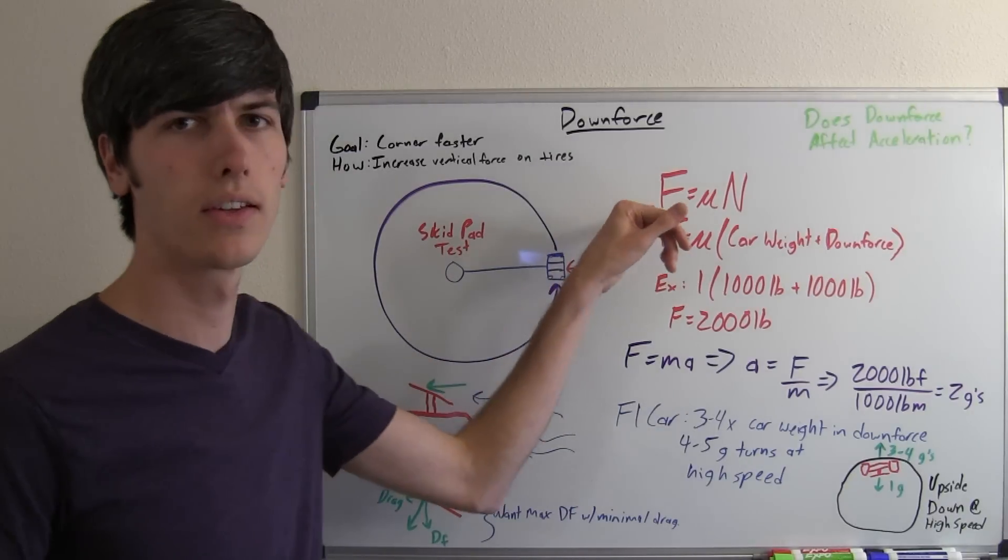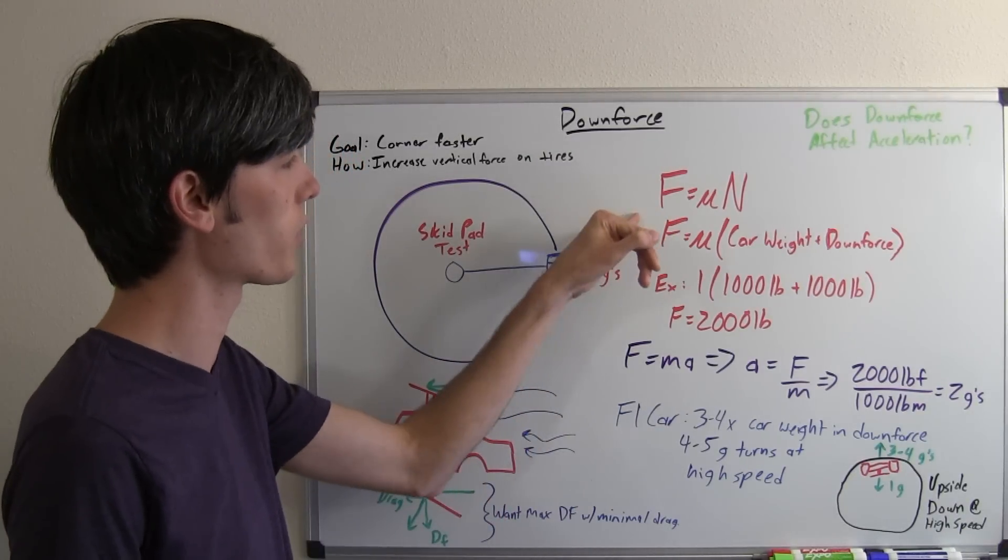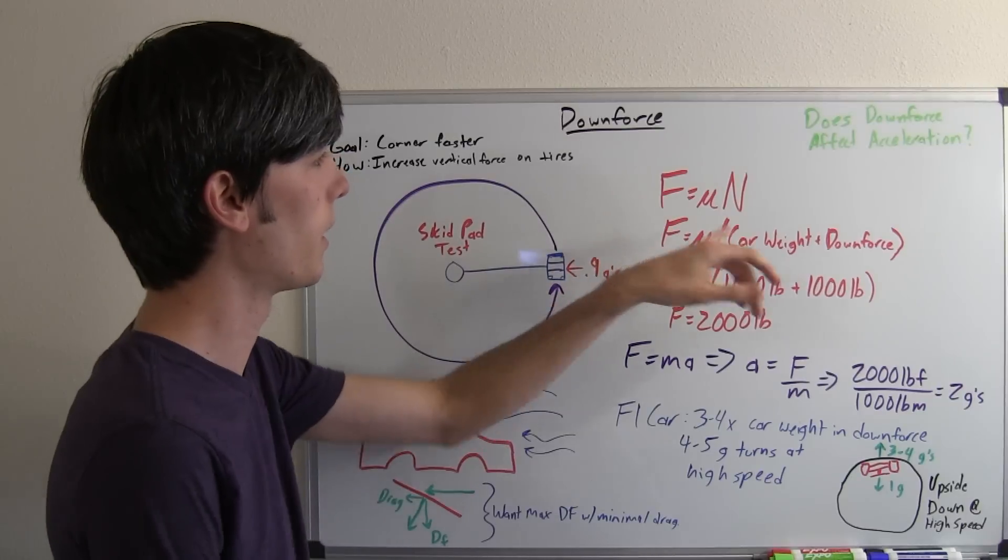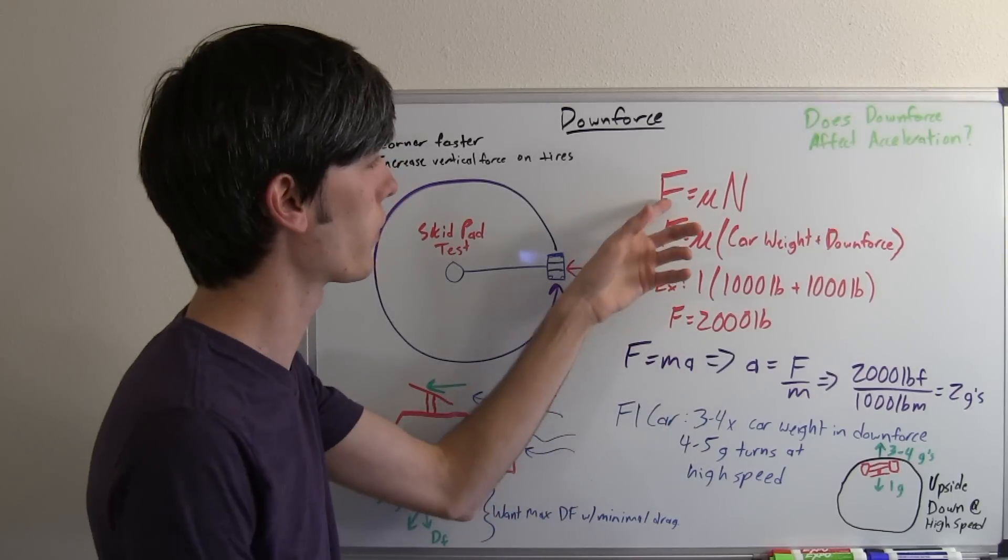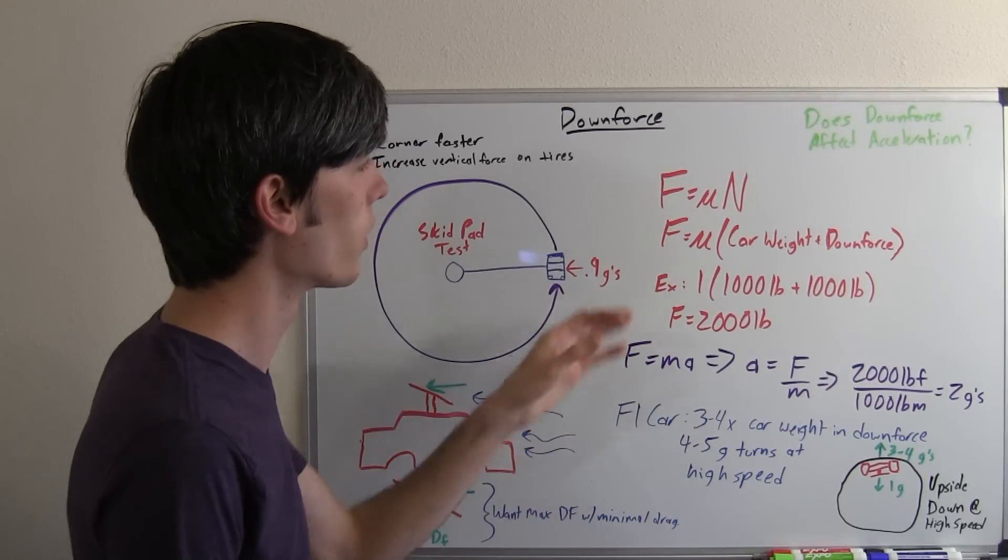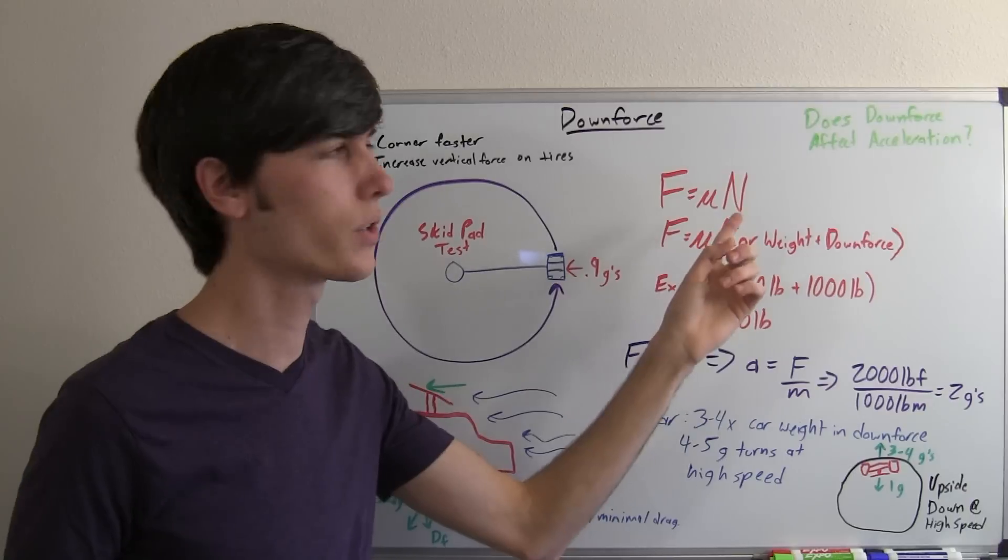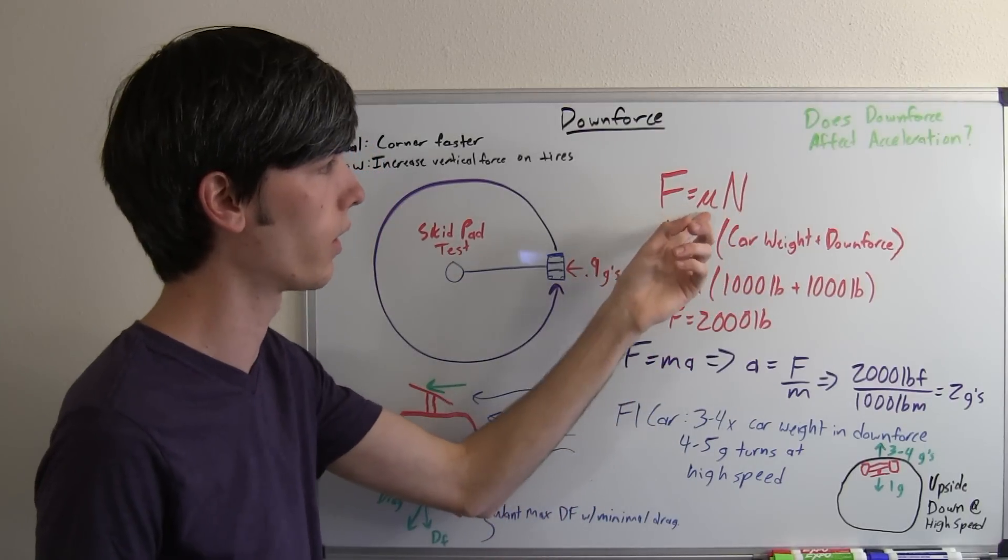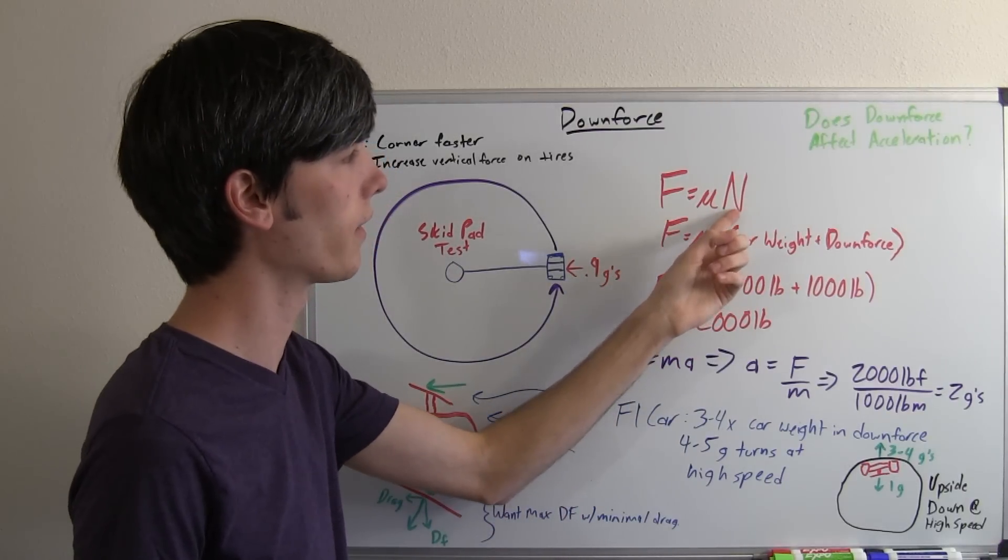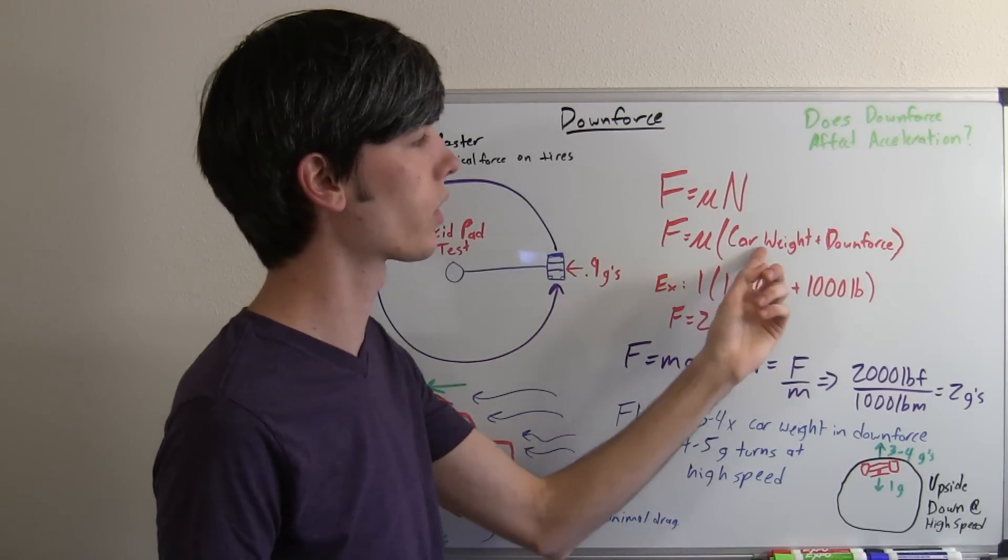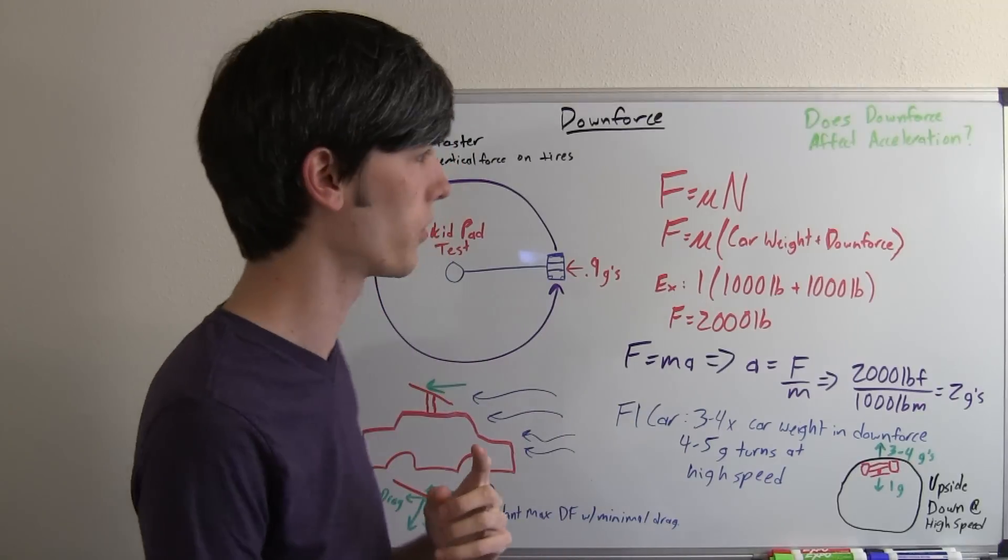You've probably seen this equation before, especially if you've watched my video on traction circles. Basically we're looking at the frictional force of the tires on the ground. The frictional force that this vehicle can hold is equivalent to the coefficient of friction of the tires with the ground multiplied by the normal force on the car. The normal force on the car is equivalent to the car's weight plus the amount of downforce it has.